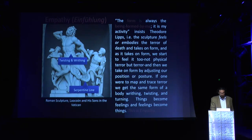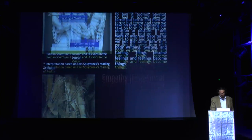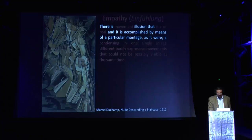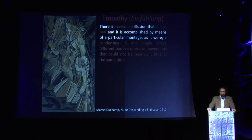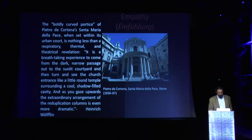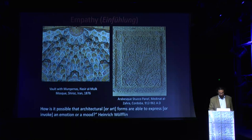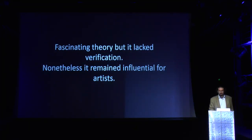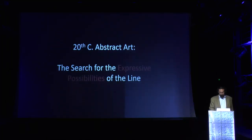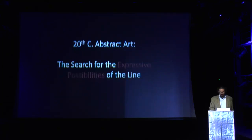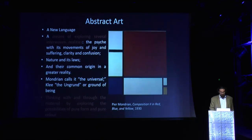With the descending nude, the painting captures a movement illusion, but the movement is not in the painting — it is there because we enact the movement in our body through this empathetic engagement. Likewise with all other artistic forms: how is it possible that architectural and art forms are able to express and invoke an emotion? I had part of the answer — a fascinating theory, but lacking verification because it was anchored in art historical speculation, though it remained influential for many artists in the 20th century.